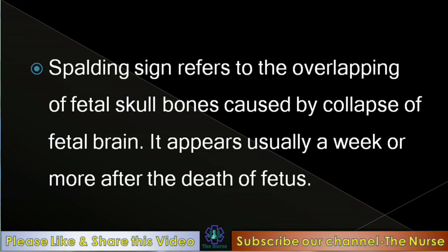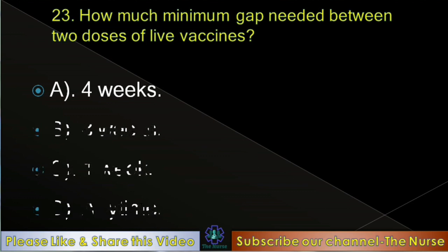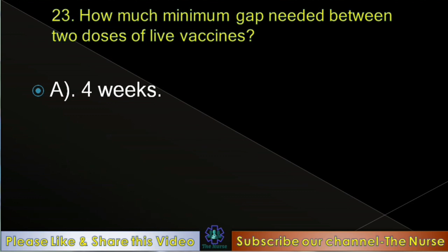Next question: How much minimum gap is needed between two doses of live vaccines? Options: 4 weeks, 8 weeks, 1 week, anytime. Correct answer: 4 weeks. Four weeks is needed between two doses of live vaccines.